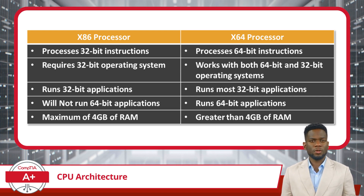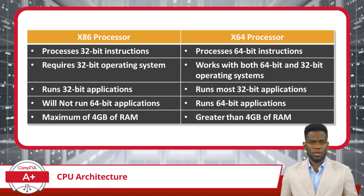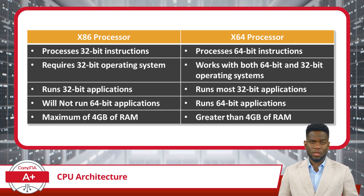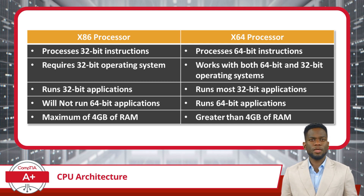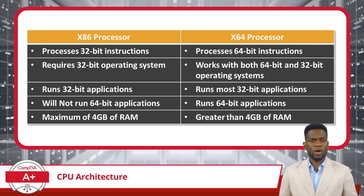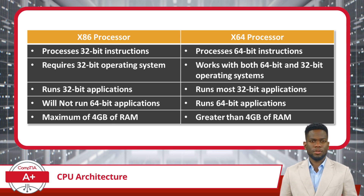Additionally, when it comes to memory, a 32-bit CPU will limit the amount of RAM that can be recognized by a computing system to 4 gigabytes. 64-bit systems also have a limit, but the number is super large and not a real concern.